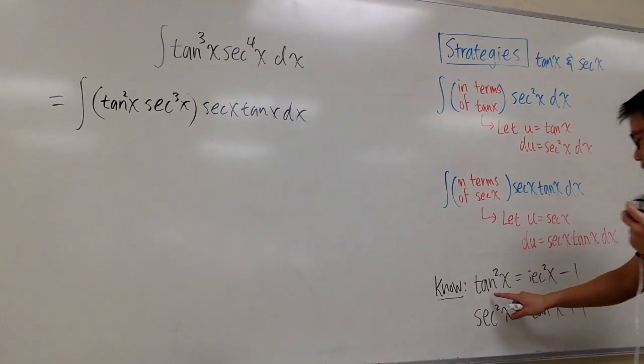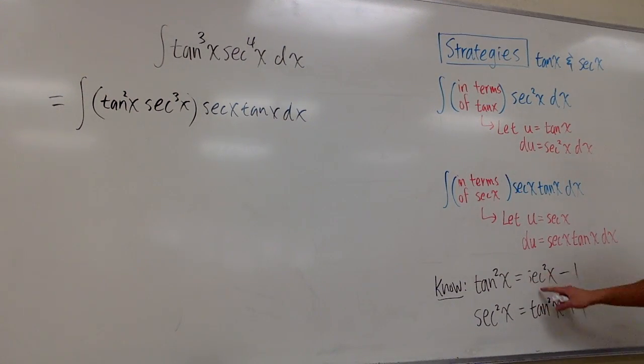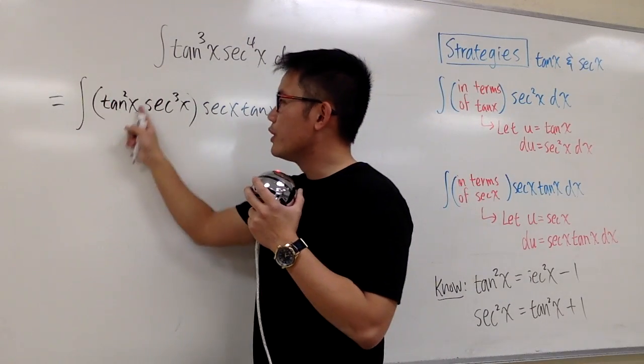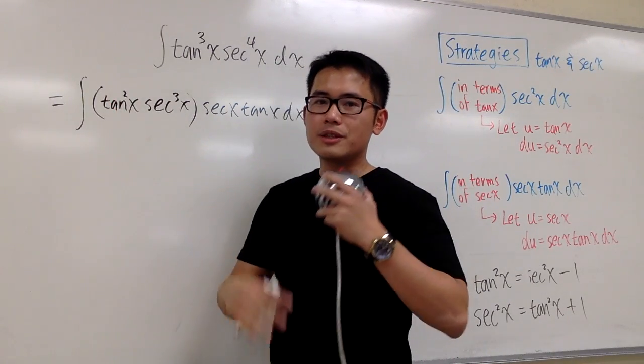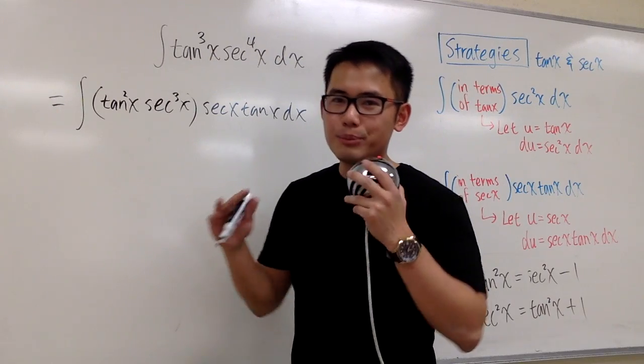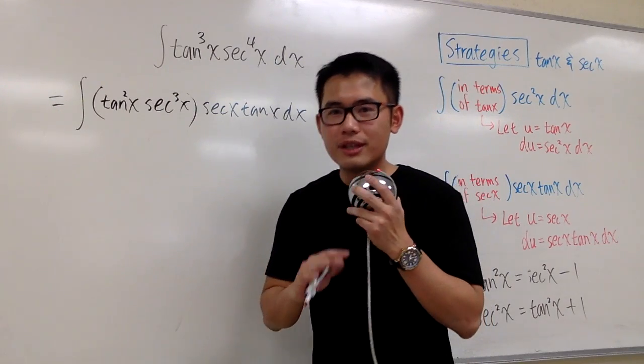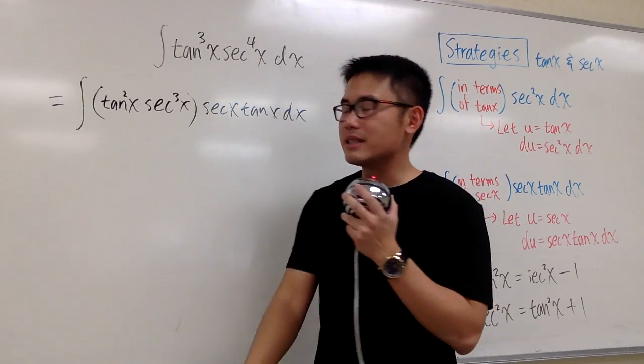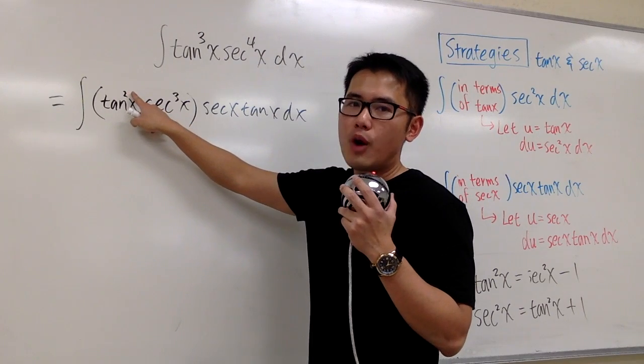Yes, we can. Because we know tangent squared x is equal to secant squared x minus 1. You see, this time, we can rewrite the tangent in terms of secant, and the expression is pretty easy. I don't use square root. And the reason is, we have an even power.